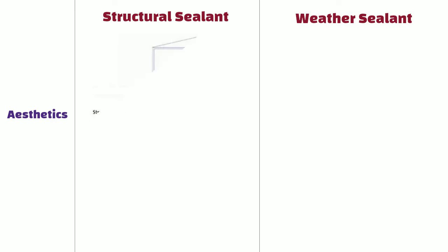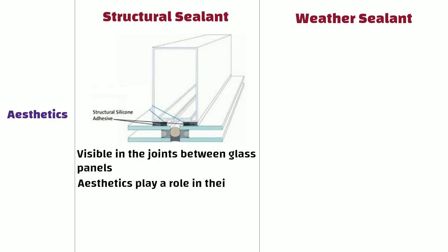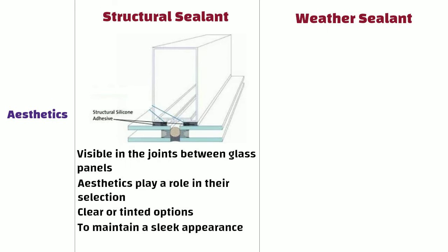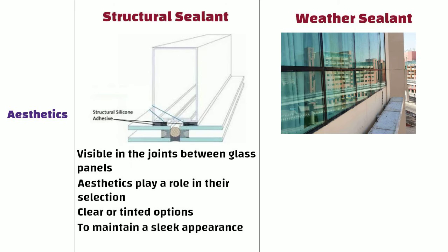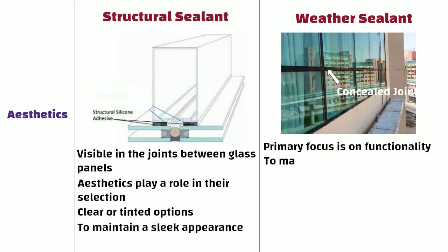Aesthetics. Structural sealants are often visible in the joints between glass panels and aesthetics play a role in their selection. Clear or tinted options are commonly used to maintain a sleek appearance. In case of weather sealants, the primary focus is on functionality. Weather sealants are often applied in concealed joints to maintain a clean and unobstructed look.